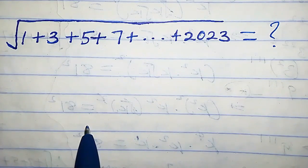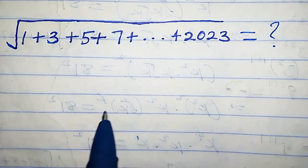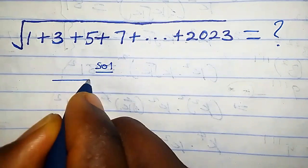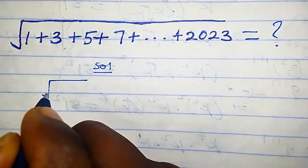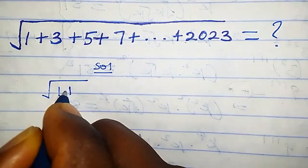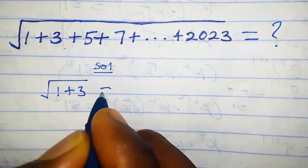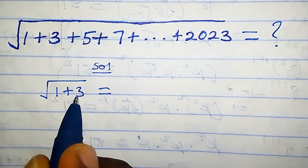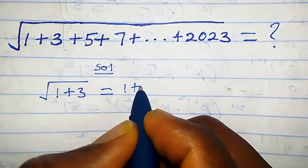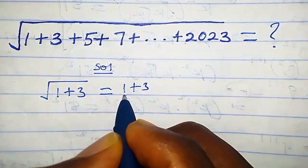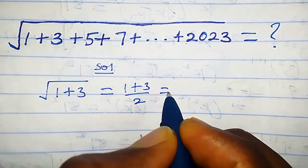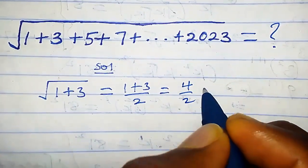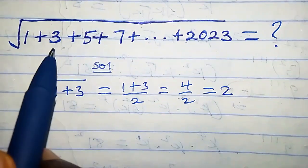How do we solve this nice radical equation? Let's consider the first two terms first. We have square root of one plus three. This equals — we are going to add the first and the last term, so we have one plus three and divide it by two. This equals four over two, which equals two.